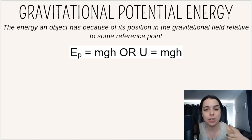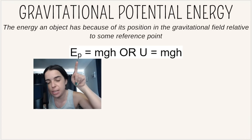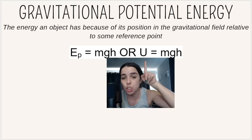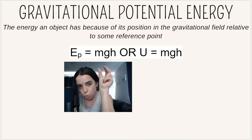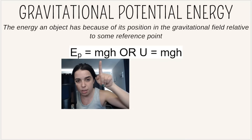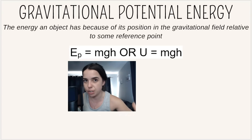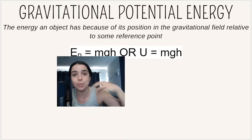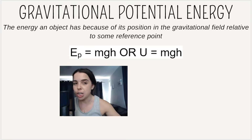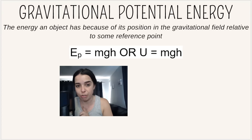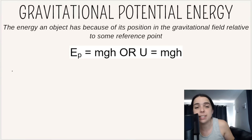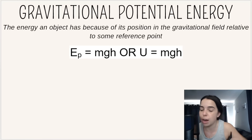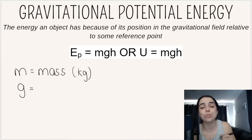Gravitational potential energy, often shortened to just potential energy, is written as EP or sometimes as U depending on the textbook. The formula is EP = m × g × h. The definition gives clues about the variables: gravitational potential energy is the energy that an object has because of its position in the gravitational field relative to some reference point. M stands for mass, measured in kilograms.